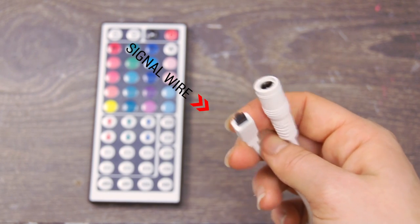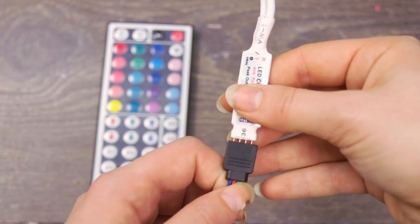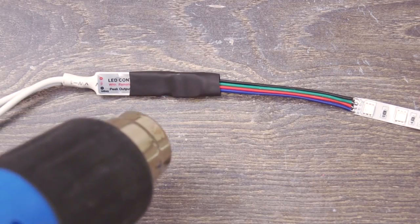This is the signal wire and the power input on the controller. At the other end we can connect the LED strip to the controller like this. The shrinking tube will make it stay in place.